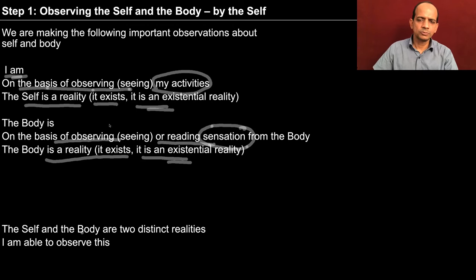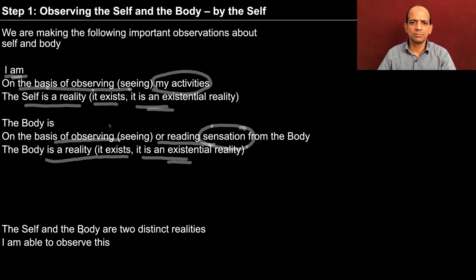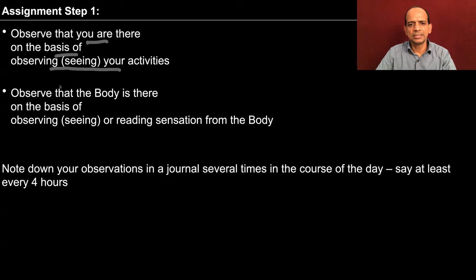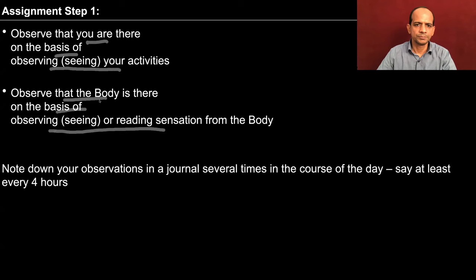This comes somewhat naturally to us — we are able to say that yes, I am there, the body is there. But if you try to investigate and make out how you come to know that you are there and the body is there, this is what we are going to do in step one. The assignment for step one in exercise two is: observe that you are there — observe your activities. This is something you already have done in detail in exercise one, so it will not be very difficult. Now here you have to observe that the body is there by observing or reading the sensation from the body, so whatever sensations are coming from the body to you, you have to be aware of them.